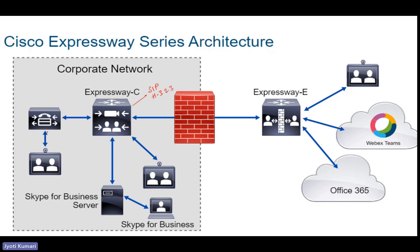In your corporate network, if you have some devices registered on CUCM and some devices registered on Expressway, communication between these is possible through Expressway. Interworking is required if you have different devices like SIP and H.323. If you have only SIP devices, they can communicate between CUCM and Expressway without enabling interworking. For any third-party devices, interoperability support is provided on Expressway C.